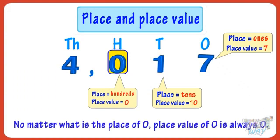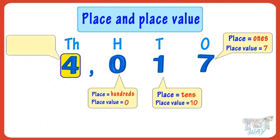No matter what is the place of 0, place value of 0 is always 0. Place of 4 is thousands, and place value of 4 is 4 thousand. So kids, now you have a fair idea. What is place and place value?